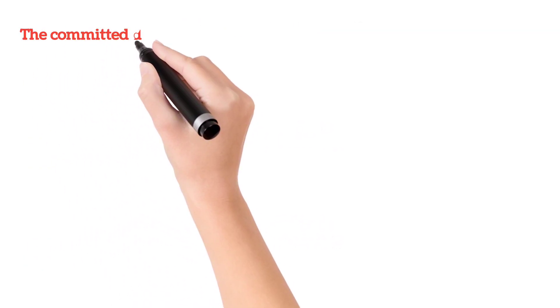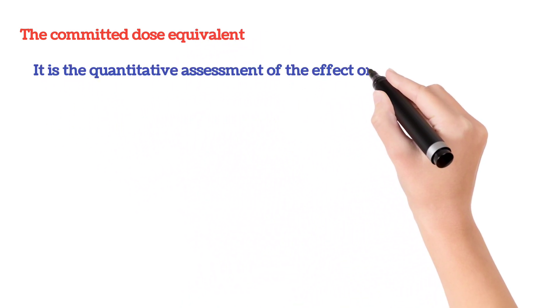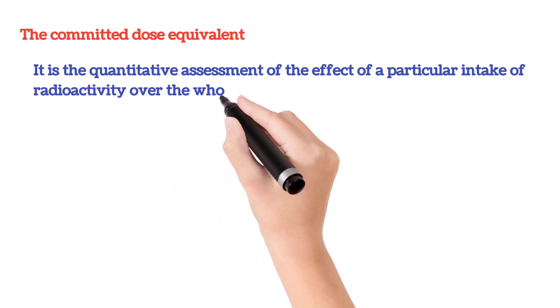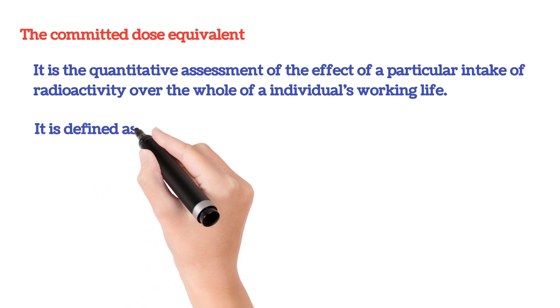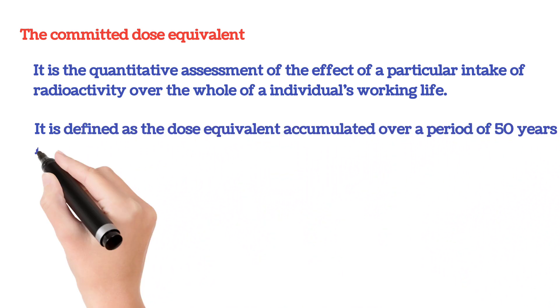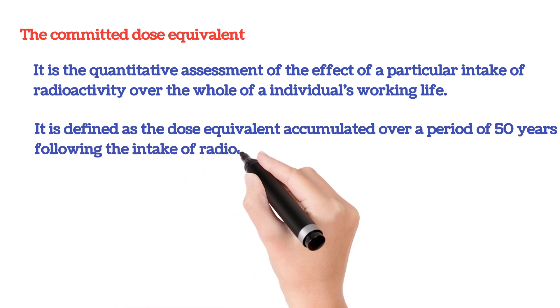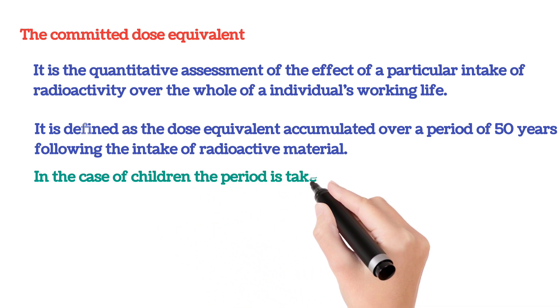The committed dose equivalent is the quantitative assessment of the effect of a particular intake of radioactivity over the whole of an individual's working life. It is defined as the dose equivalent accumulated over a period of 50 years following the intake of radioactive material. In the case of children, the period is taken as 70 years.